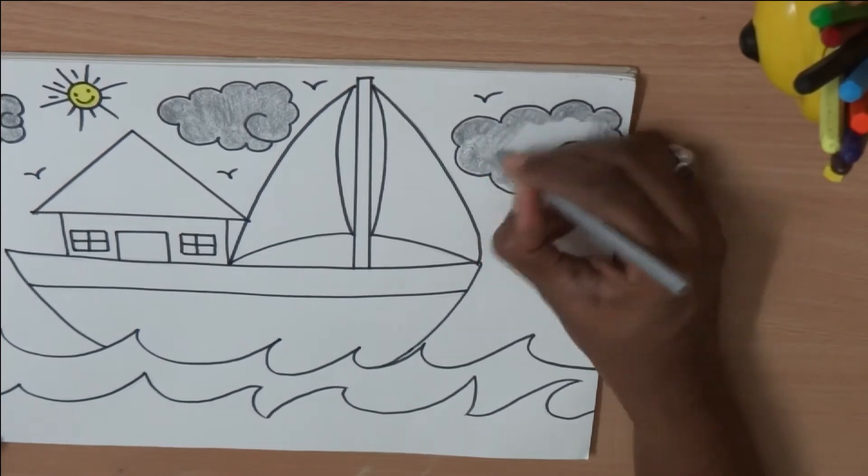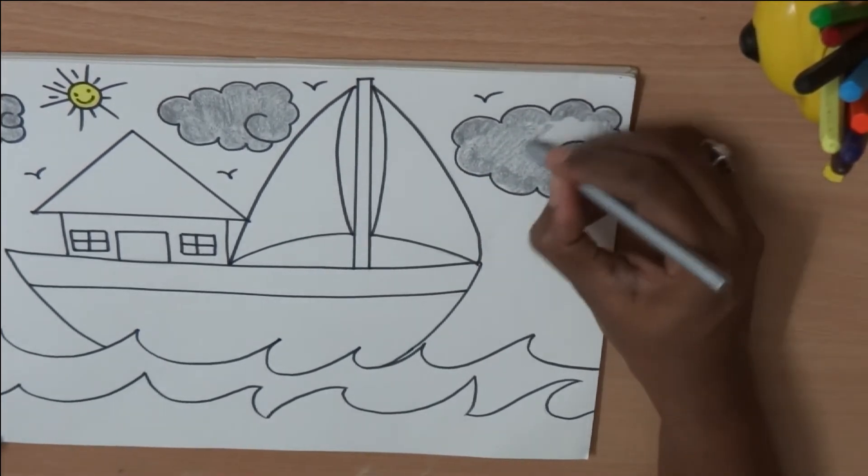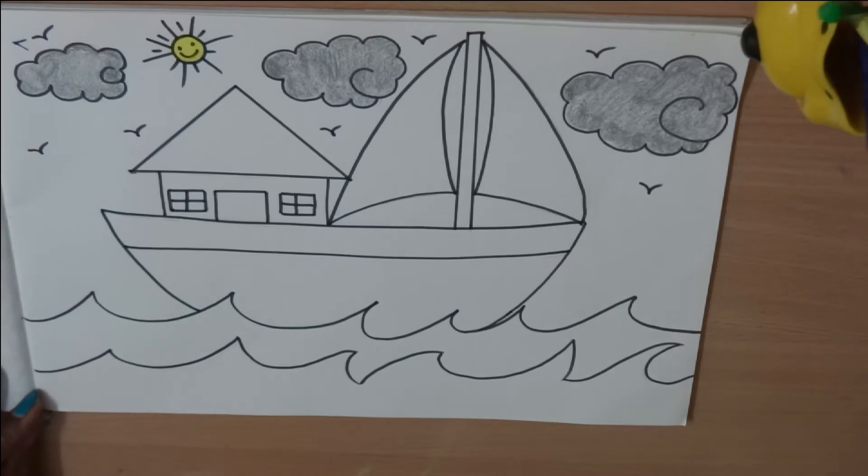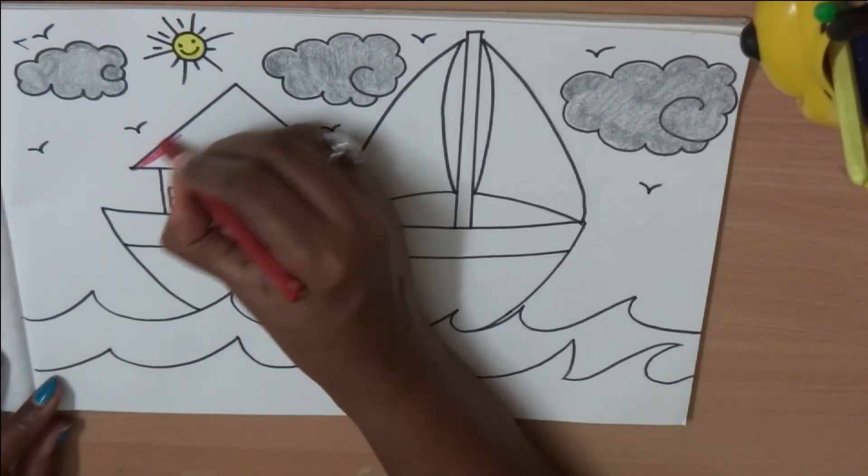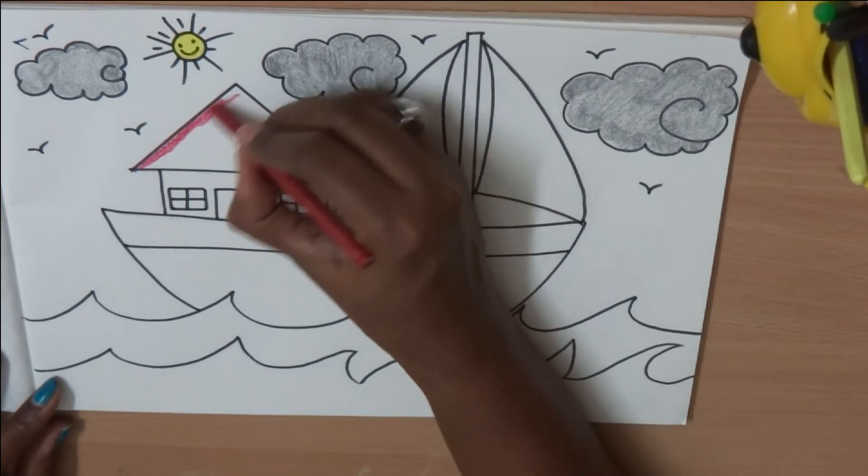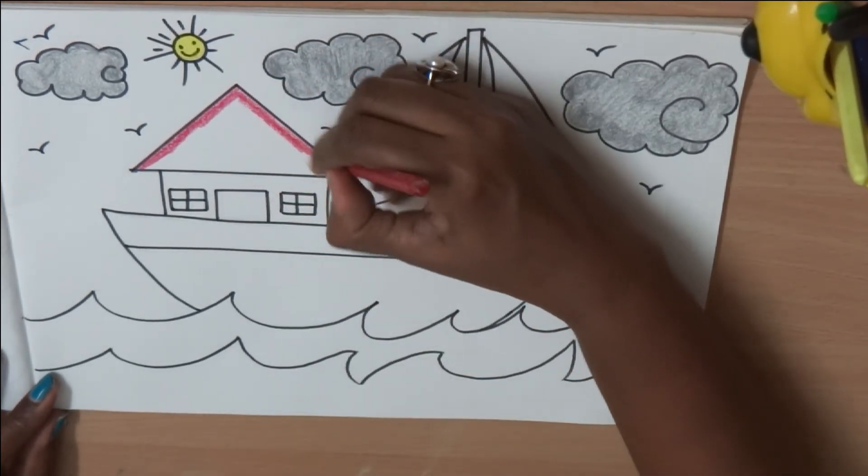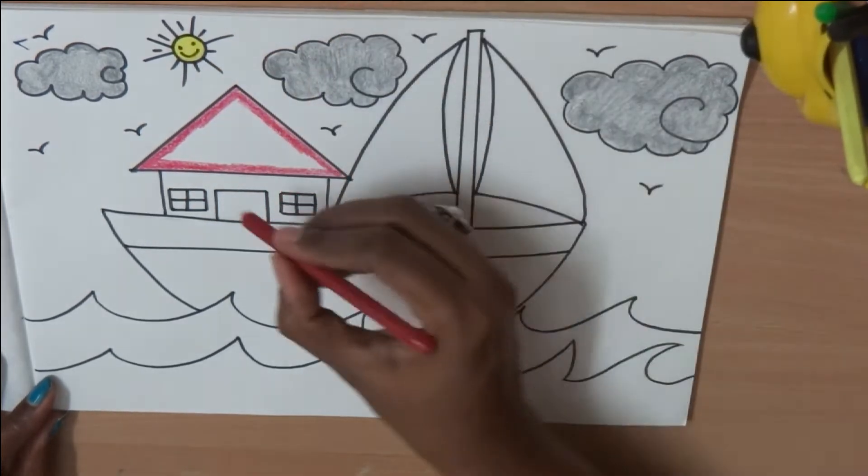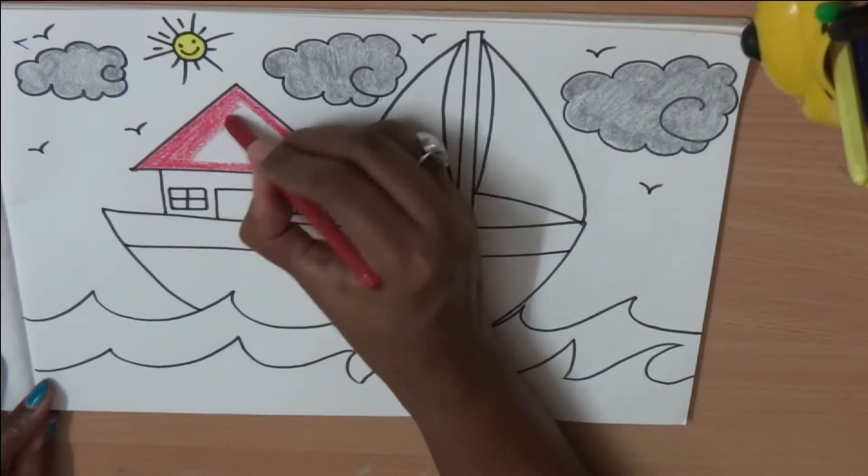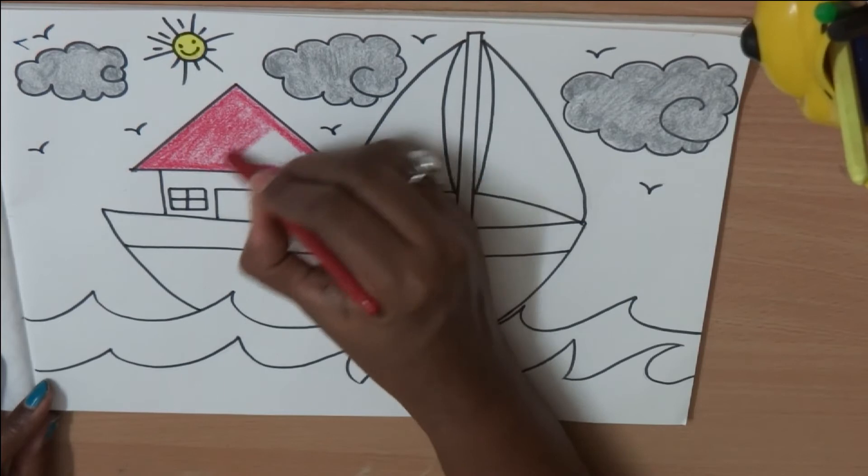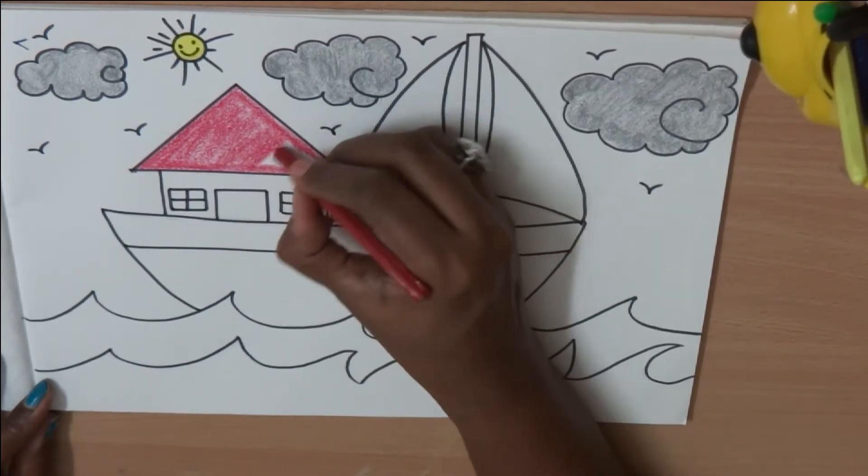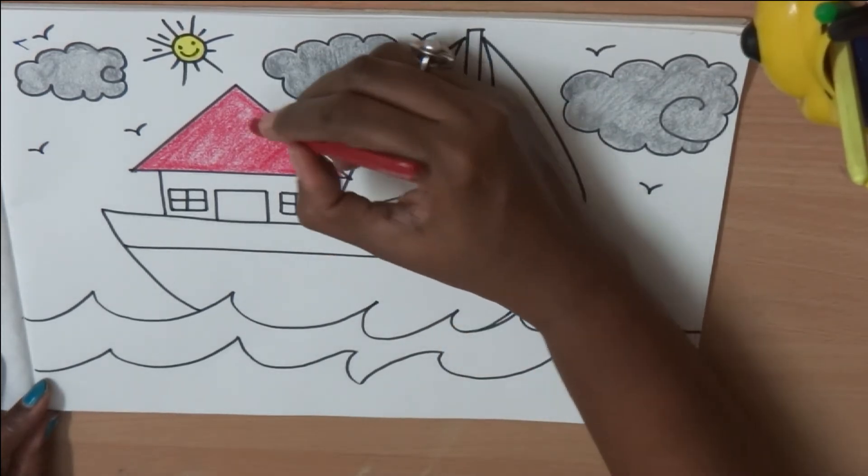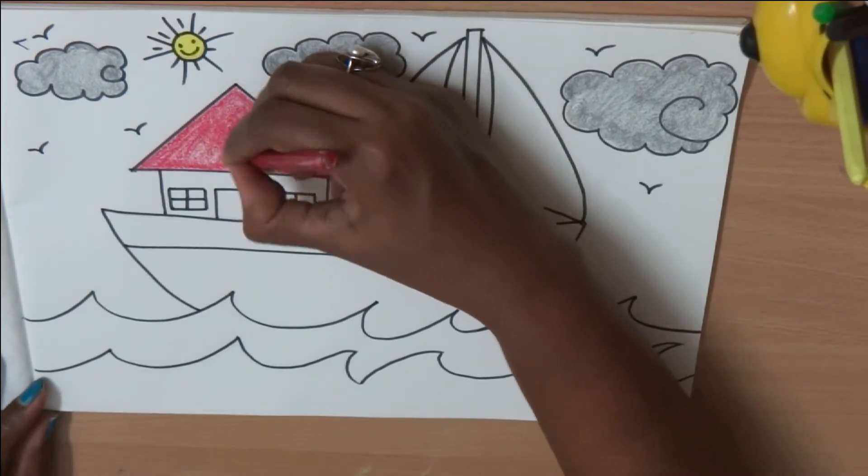Now the next rule is to color in the same direction. Color in the same direction. And rule number four, don't leave any white space. You will have to color every corner. See, I took red for the roof and I am coloring the borders. Then I will fill inside in the same direction without any gap. Spend some time and make it neat.